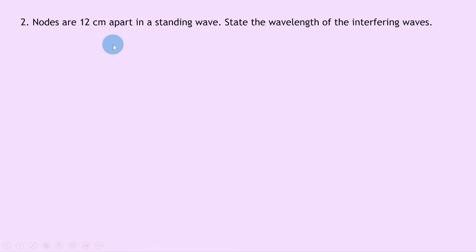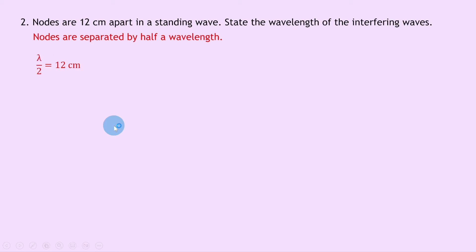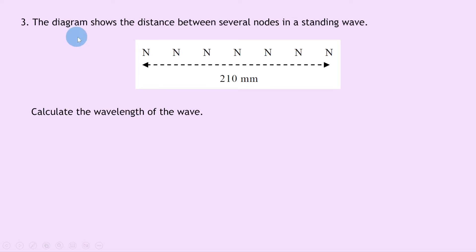Question 2 says nodes are 12 centimeters apart in a standing wave — state the wavelength of the interfering waves. To answer this, we use the key rule that nodes are separated by half a wavelength. So lambda over 2 equals 12 centimeters, and therefore multiplying both sides by 2 gives lambda equals 24 centimeters.